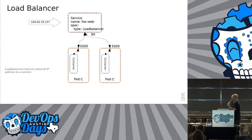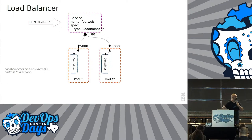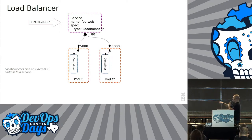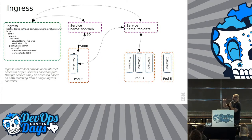You'll see load balancers more and more, pretty much everywhere inside of Kubernetes, because you can have n number of pods and you need to be able to roll out to as many as needed. So when you hit the service of that foo web right up there, it'll go to any of those pods — C, C+1, C+2, C+3.